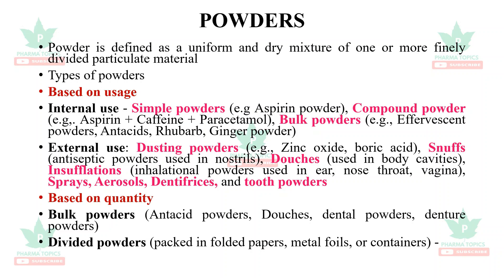First is powders. Powder is defined as a uniform and dry mixture of one or more finely divided particulate materials. The types of powders are classified based on usage and based on quantity.